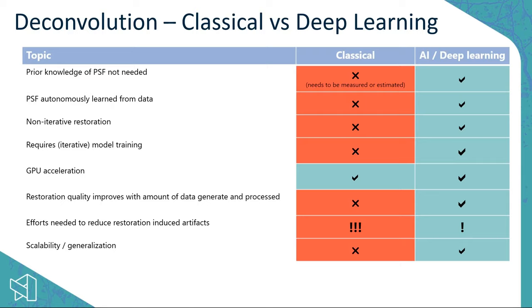For the classical approach, the restoration step itself is an iterative process — one of the parameters you define is how many iterations you want the algorithm to run to get a good result. With deep learning, the apply part is not iterative; it's a single process. However, for training a deep learning model, you do need to train it, and it is iterative, requiring somewhere between 100 and 200 epochs, which can take a few hours.